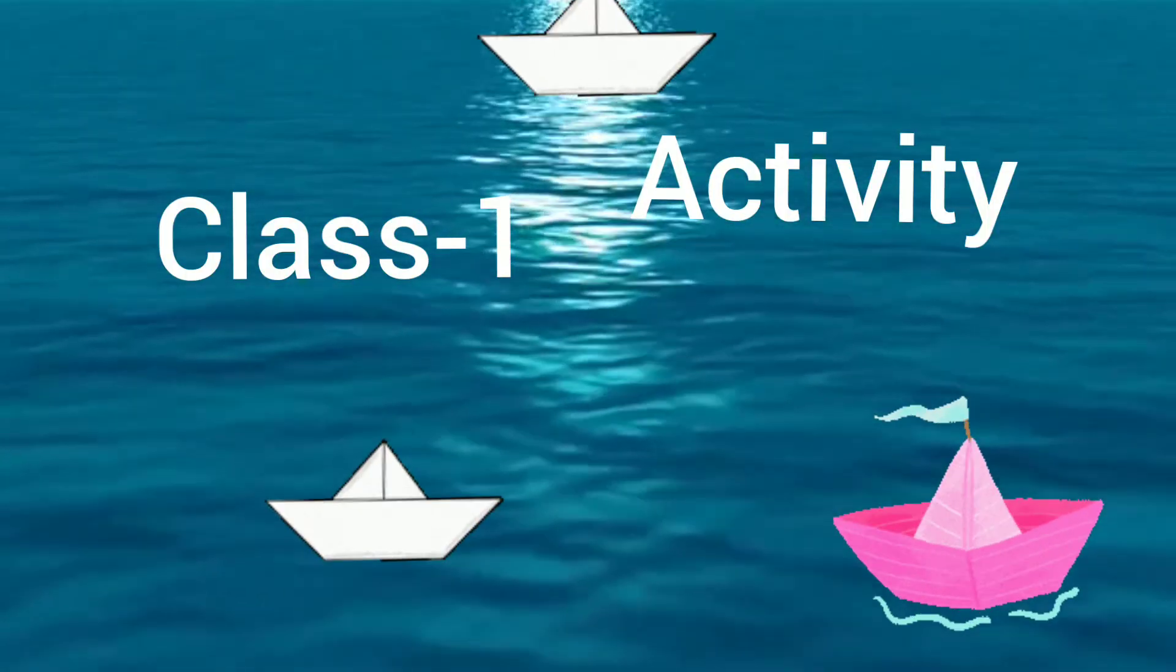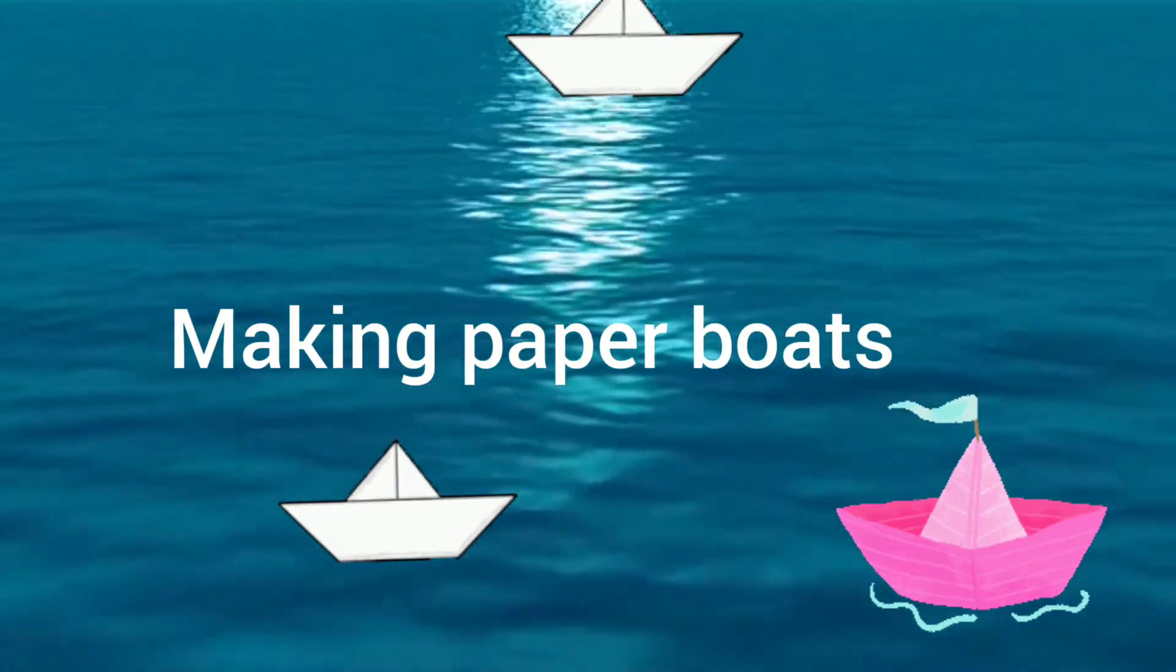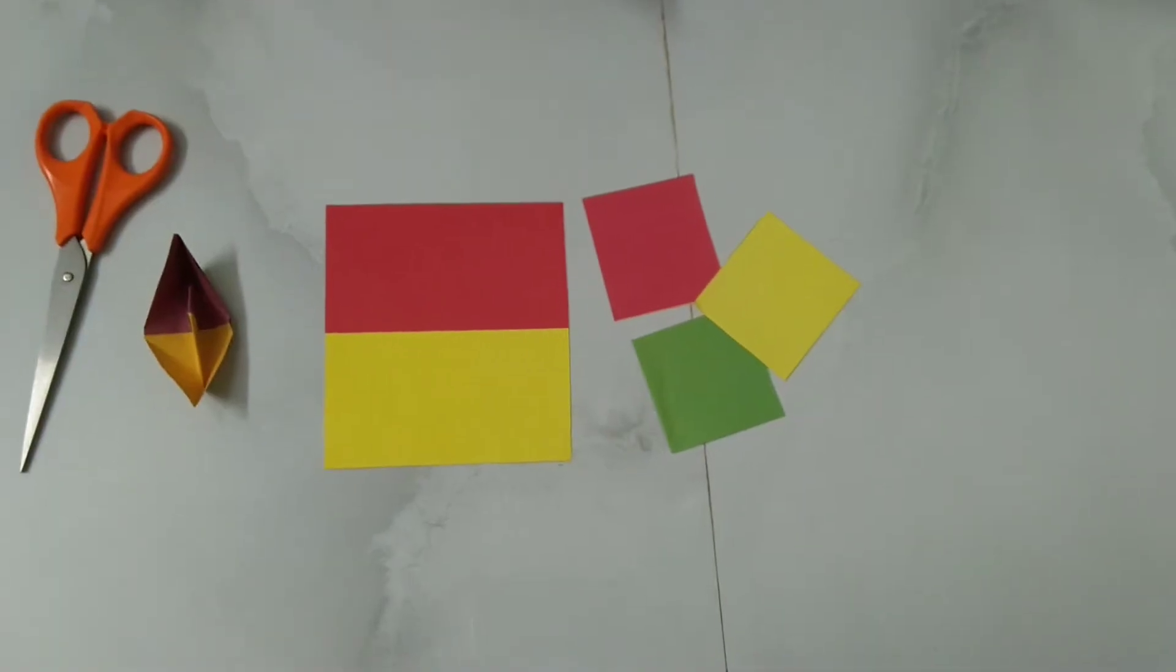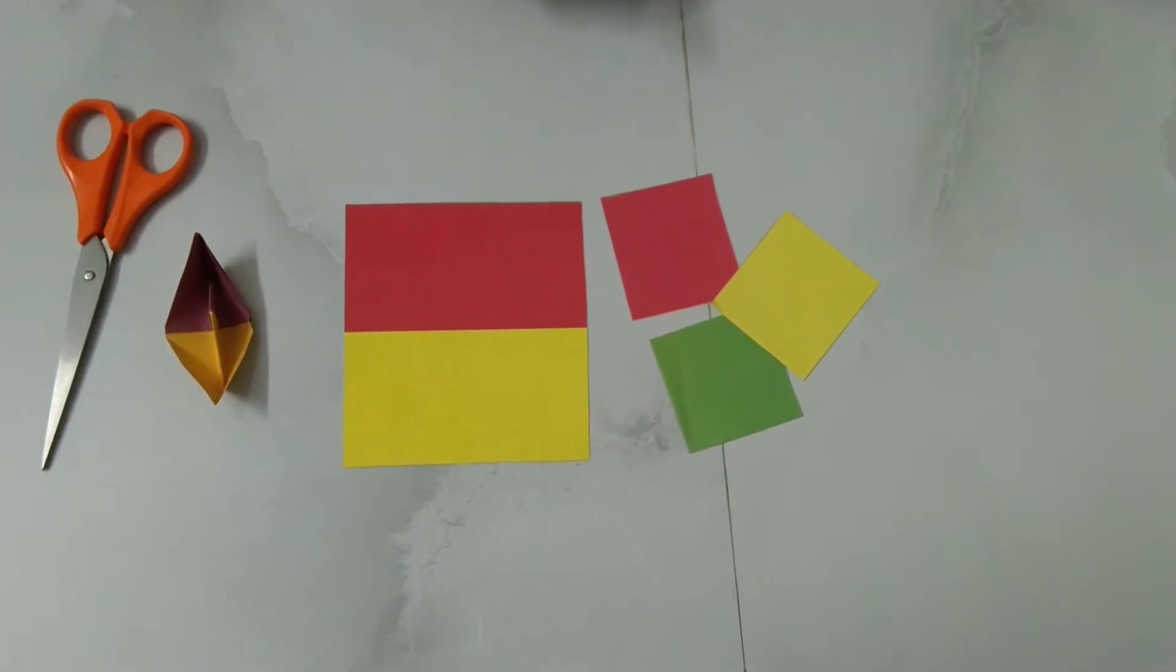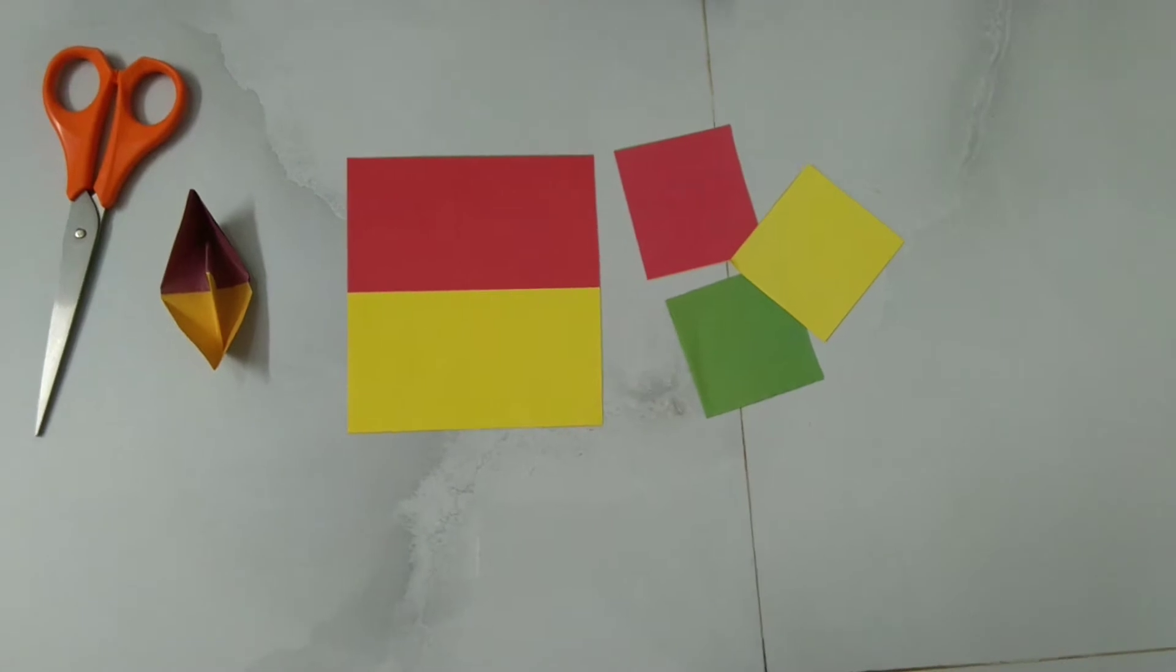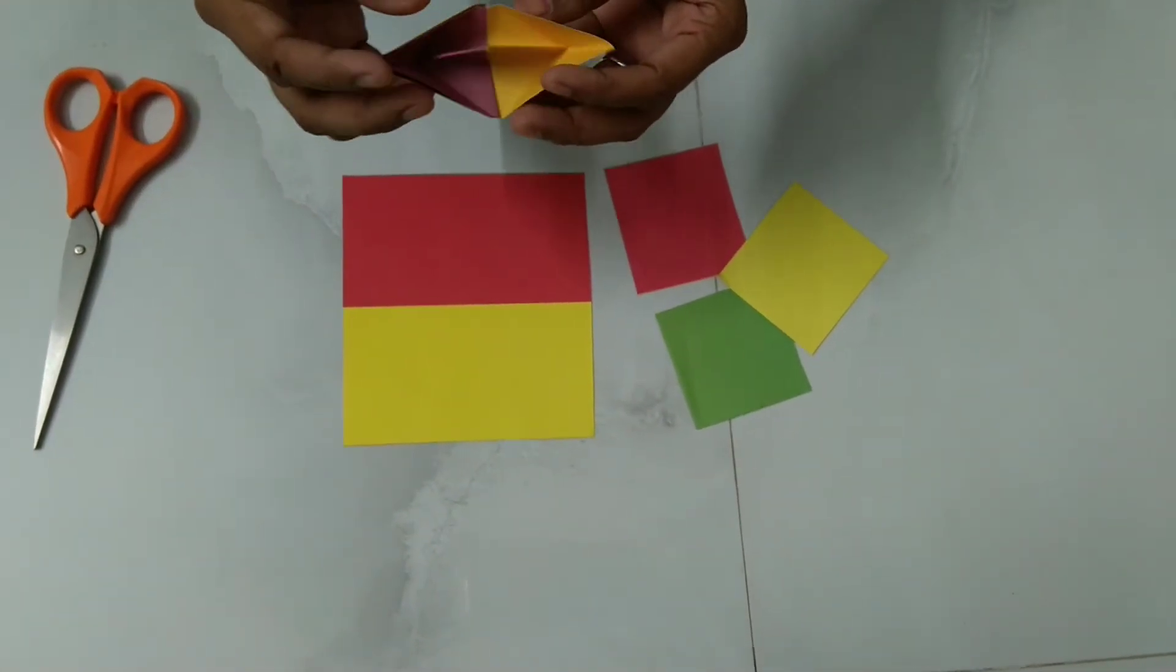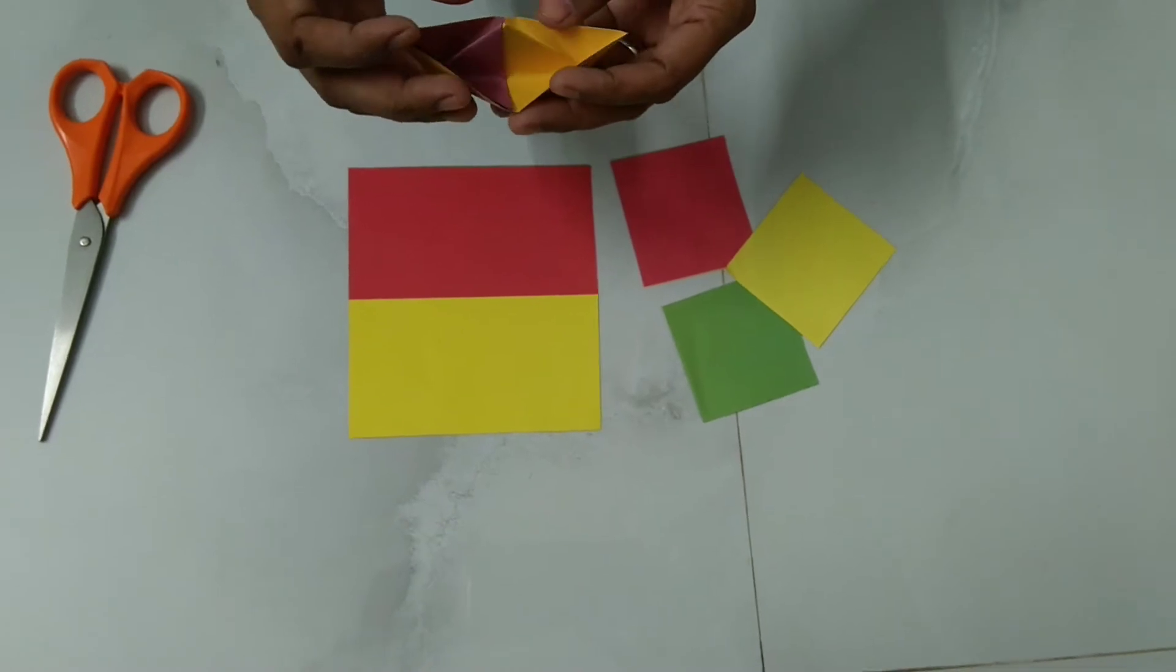Class first activity: making paper boards. Let us start making paper boards here. I have kept here one paper board as a sample. So like this, paper boards we are going to prepare today.